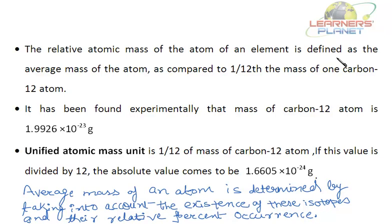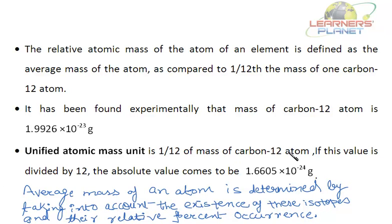The relative atomic mass of an element is defined as the average mass of the atom as compared to 1/12th the mass of one carbon-12 atom. It has been found experimentally that the mass of the carbon-12 atom is 1.9926 × 10⁻²³ grams. The unified atomic mass unit u is 1/12th of the mass of the carbon-12 atom.